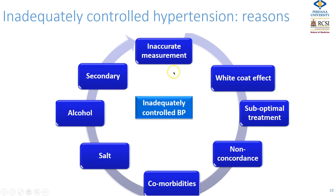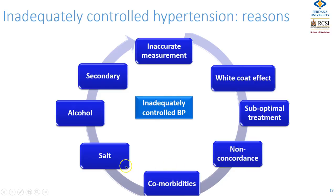The most common reasons for uncontrolled hypertension are: blood pressure inaccurately measured, cuff size inappropriate for obese patients, white coat effect, sub-optimal treatment, patient not taking their medication, comorbidities, high salt diet, excessive alcohol consumption, or underlying secondary hypertension. Before you diagnose secondary hypertension, consider all of these other causes first.